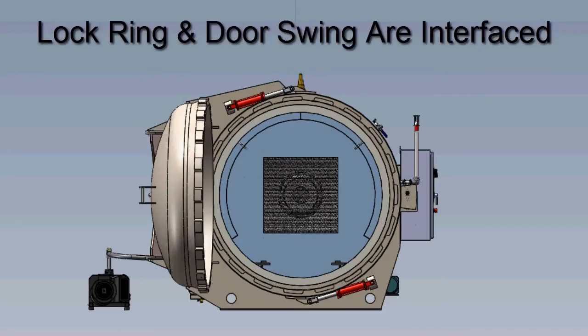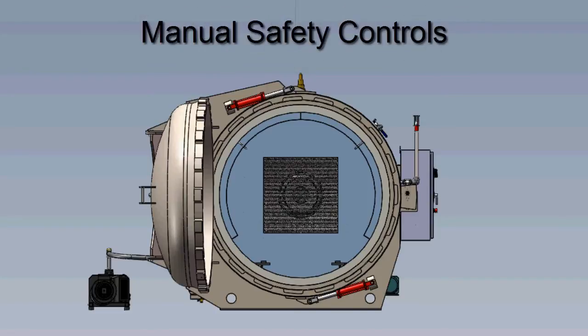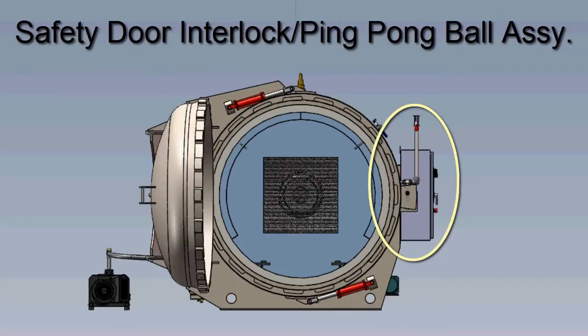The lock ring and door swing operation are interfaced to prevent operation when pressure of 1.5 PSI is present in the autoclave. The safety door handle interlock and ping pong ball assembly are some of the manual and visual safeties included in these systems.